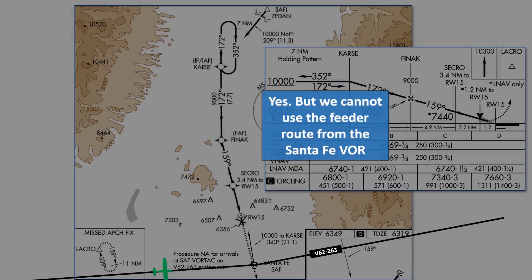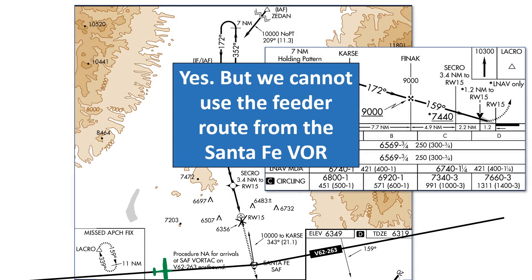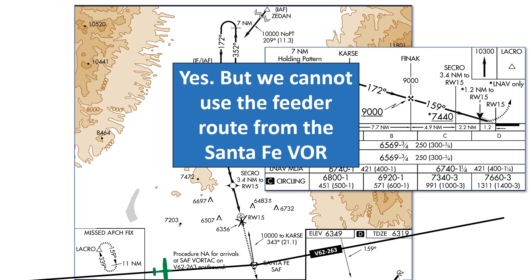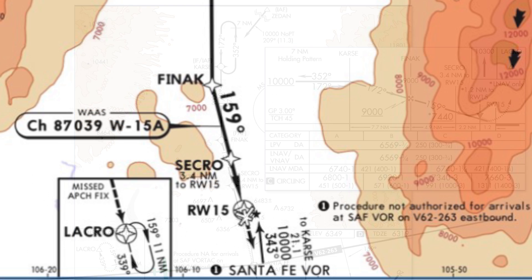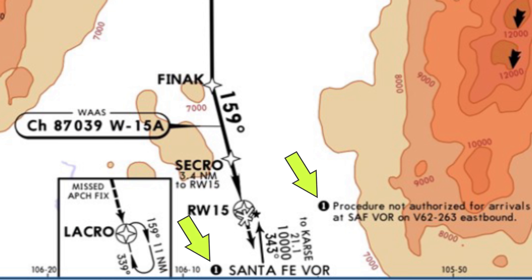The answer is yes, but we can't use the feeder route from Santa Fe. The solid, thin line pointing north from Santa Fe is a feeder route — it enables us to fly away from the VOR on track 343 to the Karst intersection, one of the initial approach fixes. It can be easy to interpret that note as a prohibition on flying the approach at all, but really what it applies to is the feeder route. This makes more sense when you look at the same approach on a Jeppesen plate — note number 1 ties together the restriction and the feeder route, showing that it applies only to that.